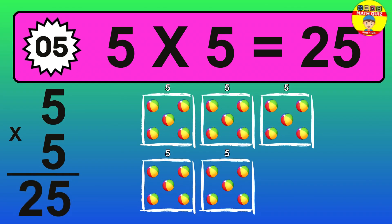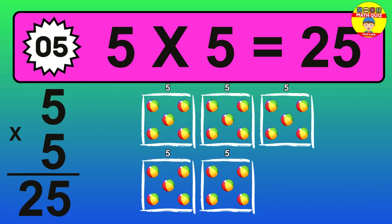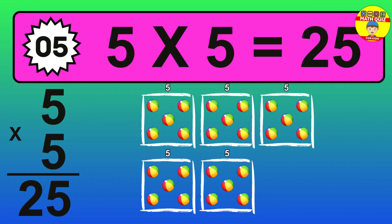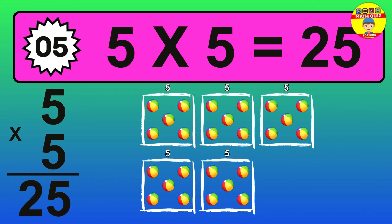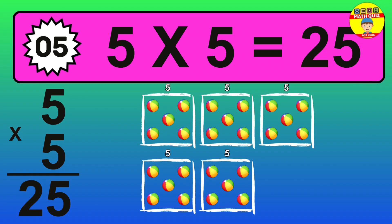The answer is 5 times 5 is 25. To calculate, we have 5 groups with 5 balls each one. So, how many balls do we have? 25 balls.